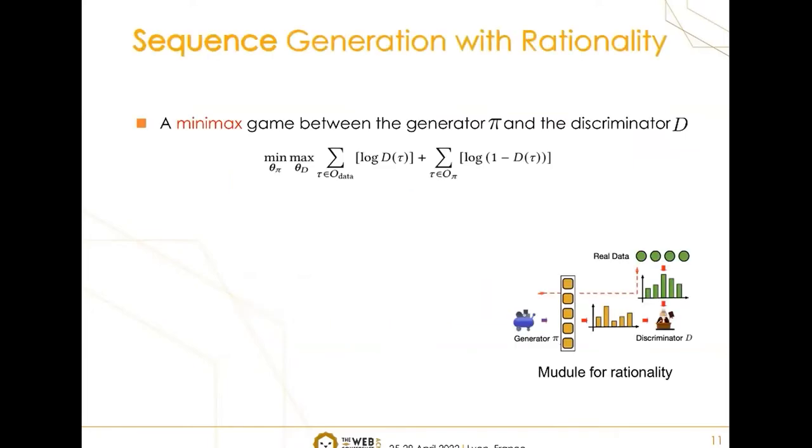Firstly, to make the generated samples more reasonable, we design an adversarial model. To make the generated samples indistinguishable from the original data, we introduce a discriminator, which aims to accurately predict whether a sample is from the original data or generated by the generator pi. While the generator pi tries to confuse the discriminator by imitating the real data. The generator and the discriminator are optimized by such a minimax game.